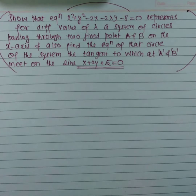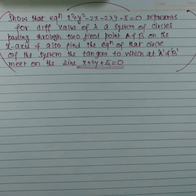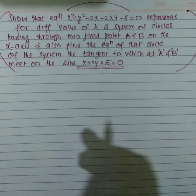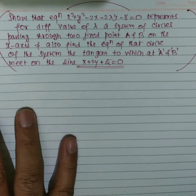Just like lambda changes, there are infinite circles for different values of lambda, but these two fixed points A and B are always passed through. The first part is a proof.